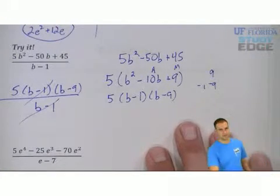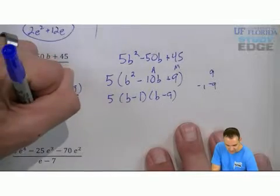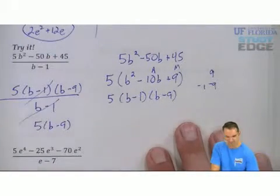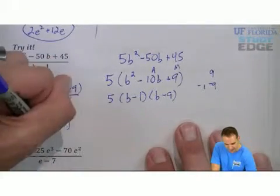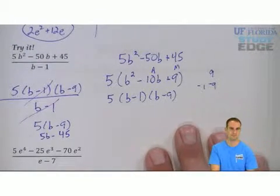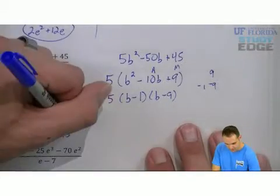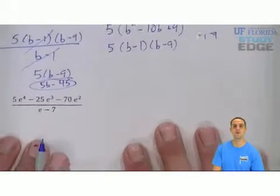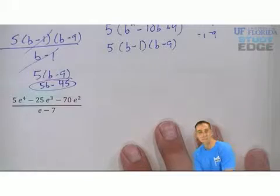The b minus 1 simplify. If you don't see an answer of 5 times b minus 9, that means they'll distribute. 5 times b and 5 times negative 9. Now, once you try one more, pause the video, try this next one out.